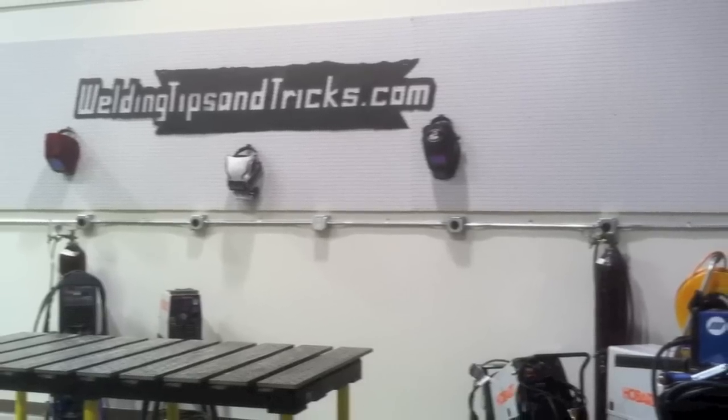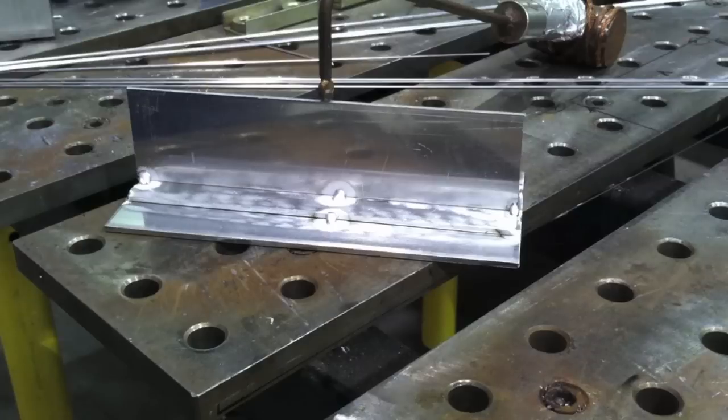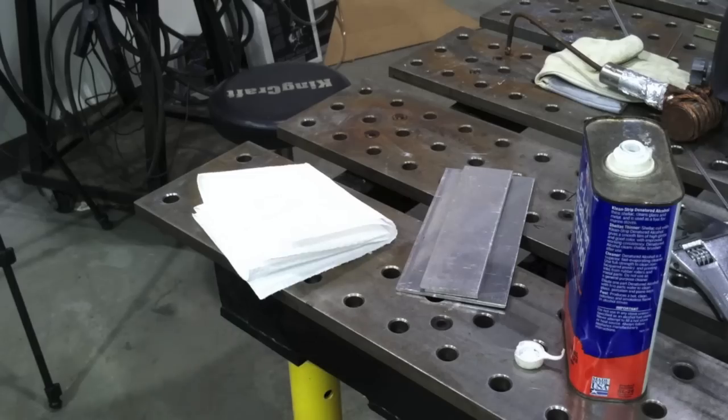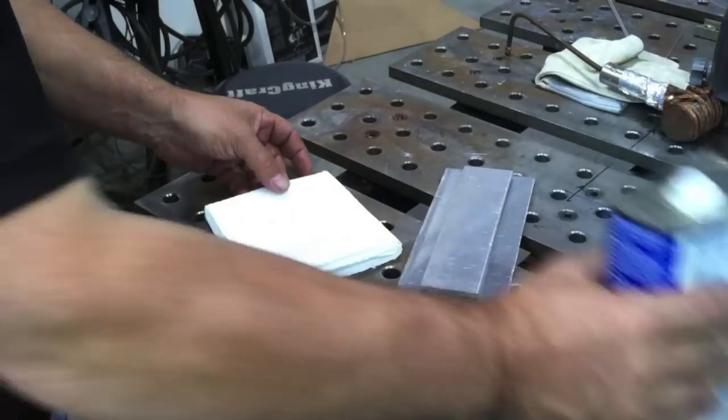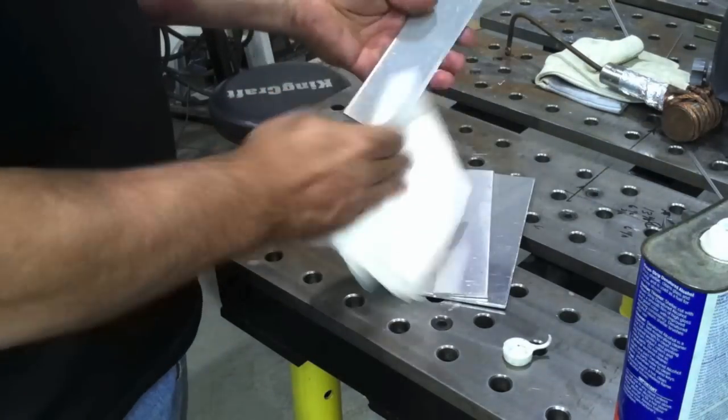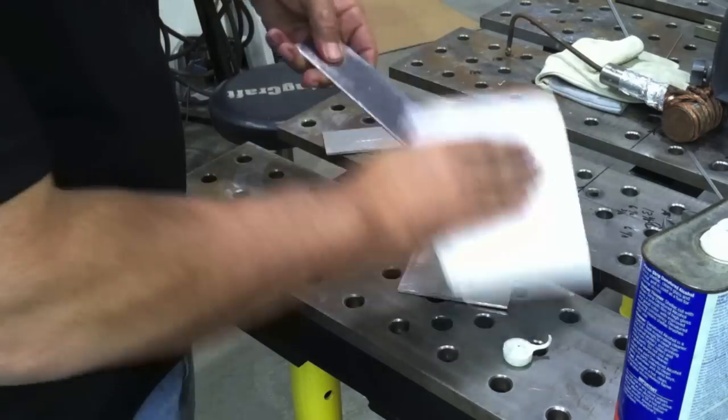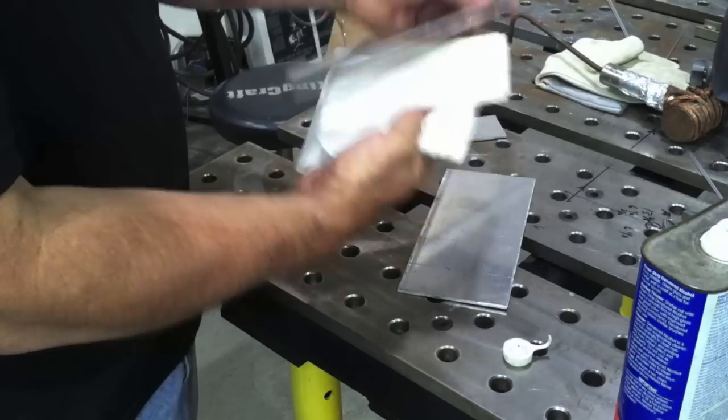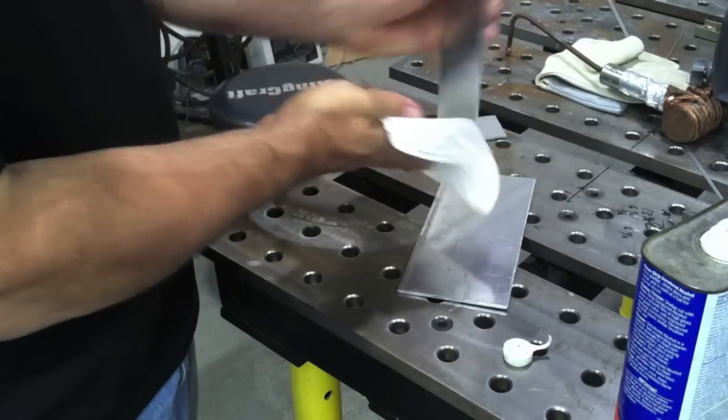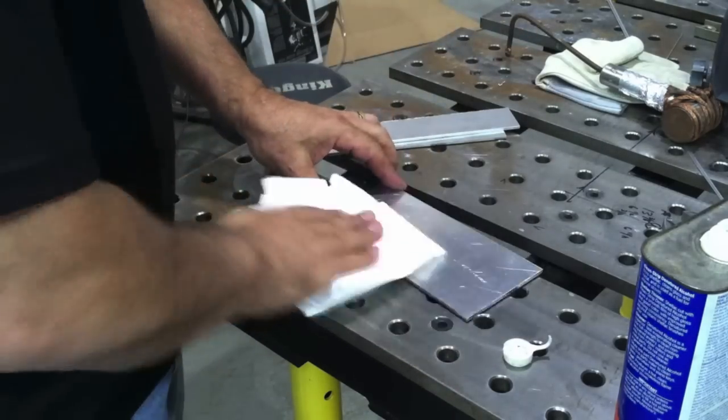Hey, this is Jody with WeldingTipsAndTricks.com. This week's video, we're doing a lap and a T-joint, 2G position, horizontal. This is geared toward welding students and welding instructors. This is a common joint in welding school. I say welding instructors because sometimes they're spread kind of thin. They might need to just say, hey, watch this video and then come get me if you need me and I'll give you a demo in addition.